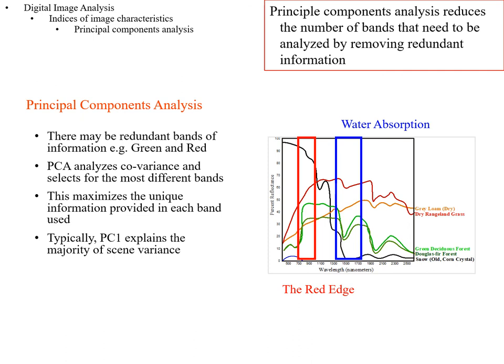Now let's talk about principal components analysis. We've discussed the R value between individual bands — if you have a high magnitude correlation (near +1 or -1), you have redundant information. The information in one band is similar to the other because of illumination effects, and because there's a certain correlation in many land covers between brightnesses in different bands. Particularly soils — their brightness in one band tends to be similar to the brightness in the next. PCA analyzes the covariance or correlation between bands and selects the information from the most different bands.